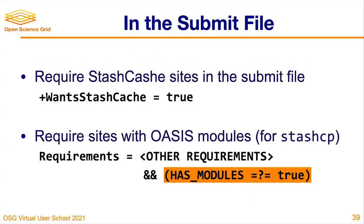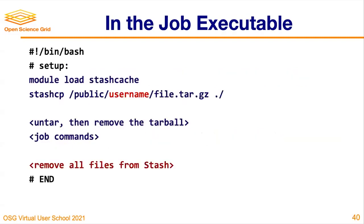In the submit file, you need to add 'wants_stash_cache = true' and a requirements statement that includes modules, in order for the stash cp tool to work. In the job executable — as an example wrapper script — you would load the stash cache module, do the stash cp command to download the file, untar it, run whatever job command you normally use, and then be sure to remove all the downloaded files. Because you're downloading these files outside of HTCondor, it doesn't know they were created by the job, so it's important to remove all files you downloaded through stash cp before the job ends.